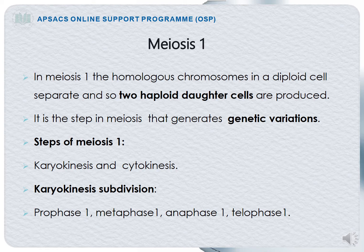The major two steps of meiosis are karyokinesis and cytokinesis. Karyokinesis is the division of the nucleus, while cytokinesis is the division of the cytoplasm. Karyokinesis is further subdivided into Prophase I, Metaphase I, Anaphase I, and Telophase I.